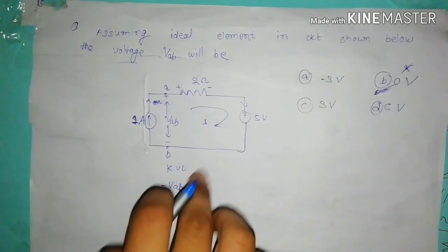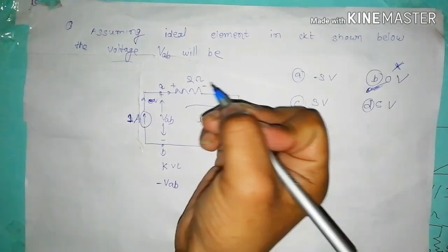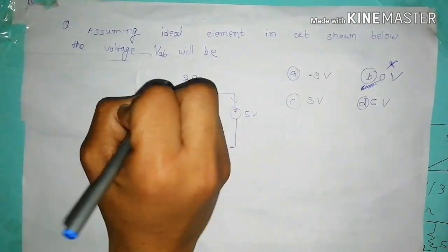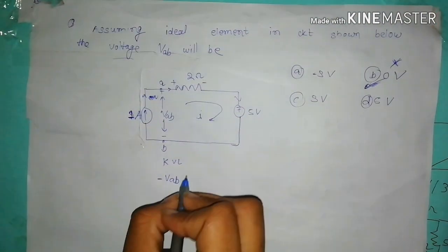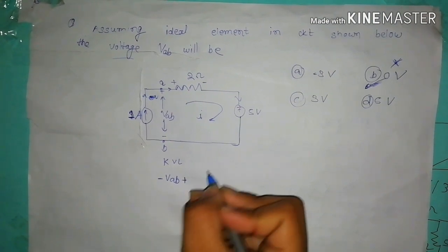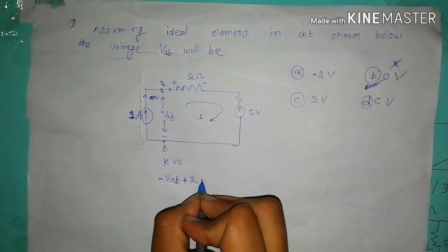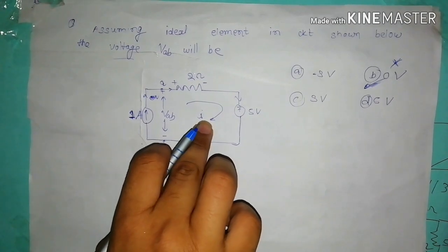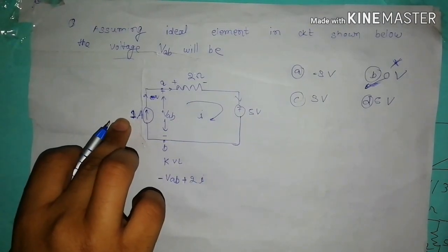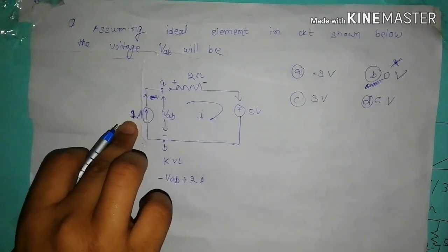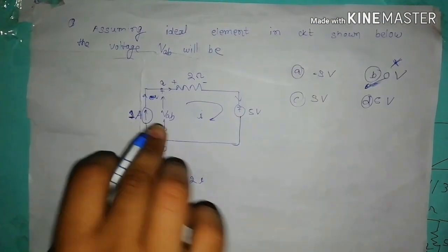Is that clear? And here the current is going in this element to the positive side, entering to the positive side. Here I take positive of 2 ohm and I. What is the value of I? It is 1 ampere as given in this circuit. I will take this value, 1 ampere.